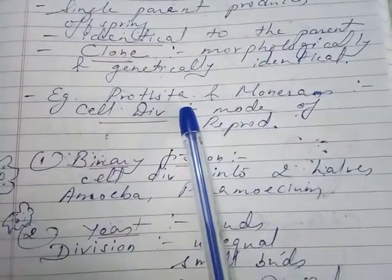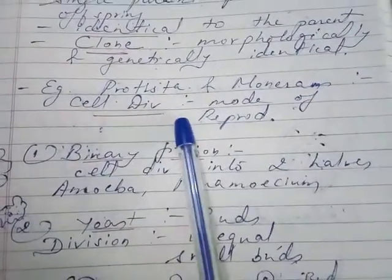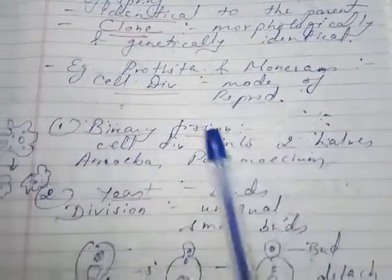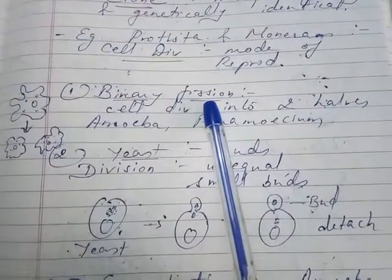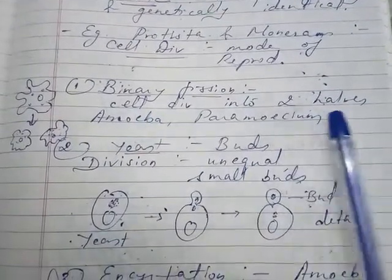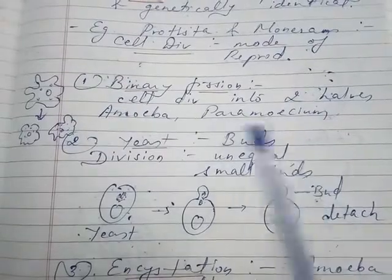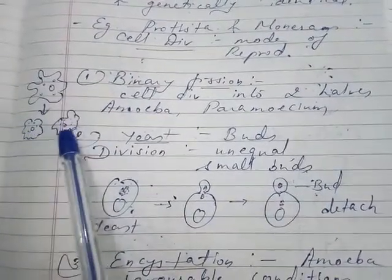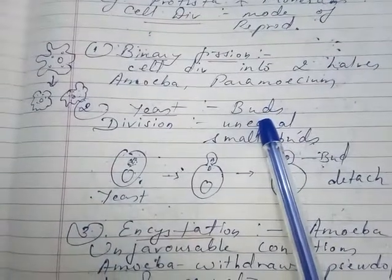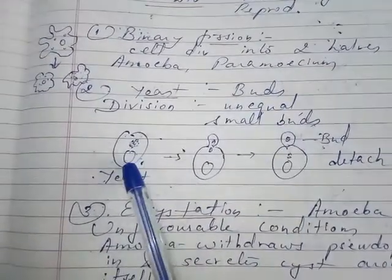In protists and monerans such as bacteria, cell division is the mode of reproduction. Binary fission is also a form of asexual reproduction — the cell divides into two equal halves. Examples are amoeba and paramecium. In yeast, buds are formed and division is unequal — small buds are formed.